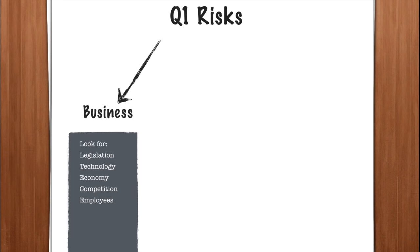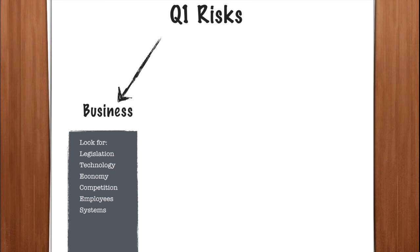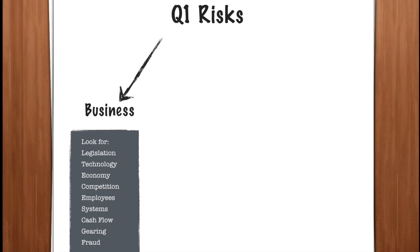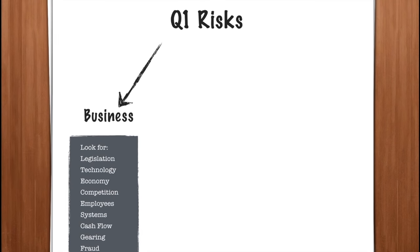Employees — loss of key staff — is absolutely crucial. If you don't have the key staff, you cannot carry out the business, particularly if you're involved in research and development. Even systems changes — old systems, new systems — all of those create a risk to the business because they may not work as expected. Cash flow — poor cash flow will damage any business, as will high levels of gearing, as will fraud. Any of those are business risks: risks that would damage the client's business.